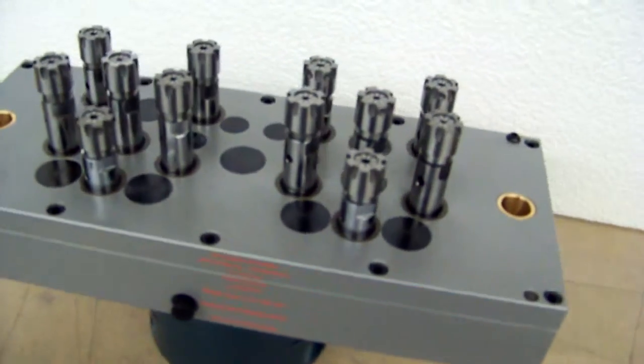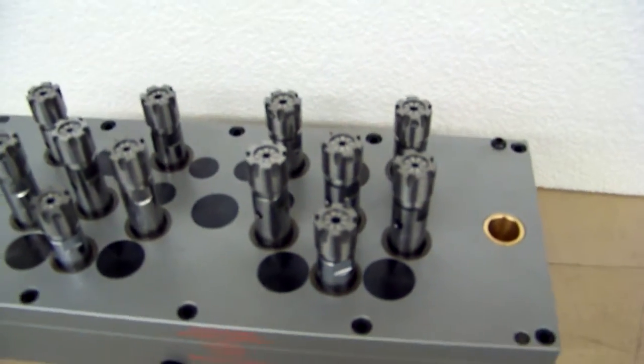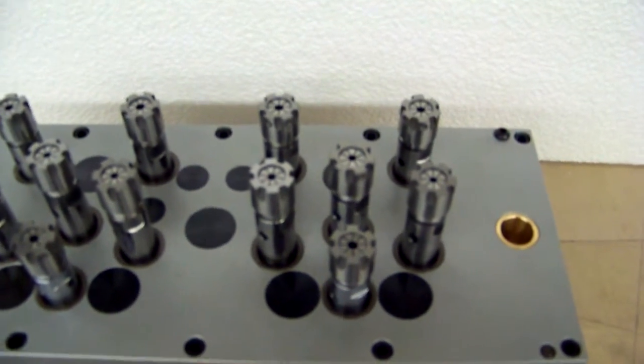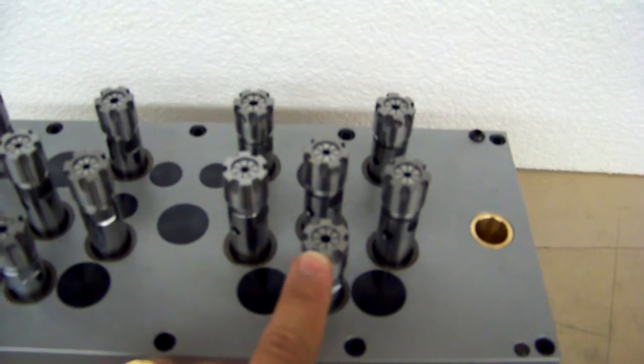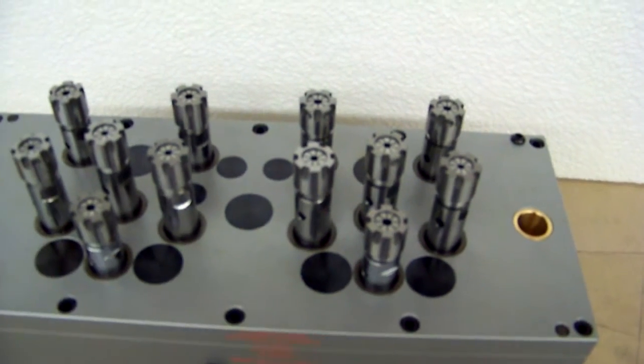Now this head, this is an ER16 style spindle. I don't know if you can see it in the video, but there are two different size collets. The closer spindle and the very top spindles have larger collets, whereas all the center spindles are smaller.